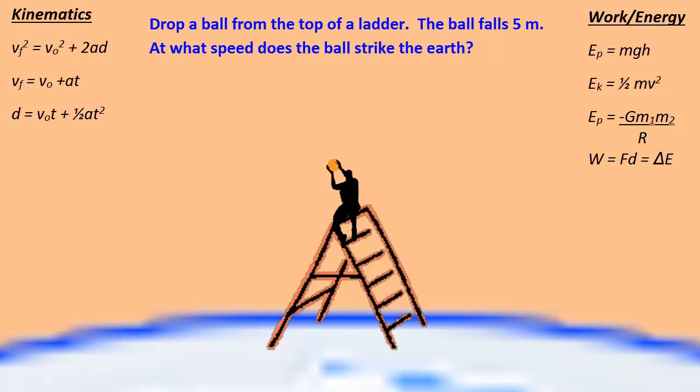Let's look at a problem we've seen before. Here we see a man on a ladder holding a ball, and he's going to drop the ball a distance of five meters, which is the height of the ladder. The question is, if he drops it from rest and it drops straight down, what speed does the ball strike the earth? How fast is it going?